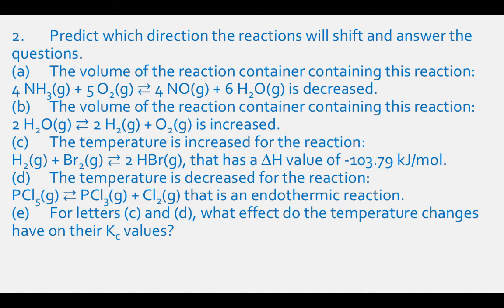Part C: the temperature is increased for the reaction H2 gas plus Br2 gas in equilibrium with 2HBr gas, which has a delta H value of negative 103.79 kJ per mole. Part D: the temperature is decreased for the reaction PCl5 gas in equilibrium with PCl3 gas plus Cl2 gas, which is an endothermic reaction.